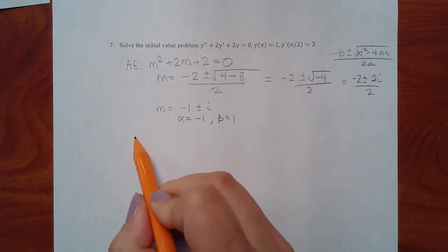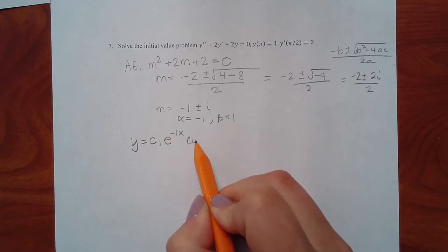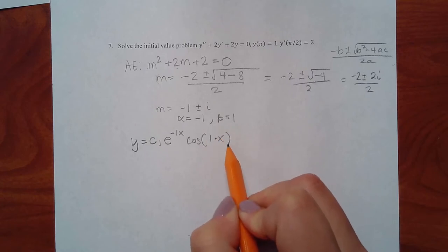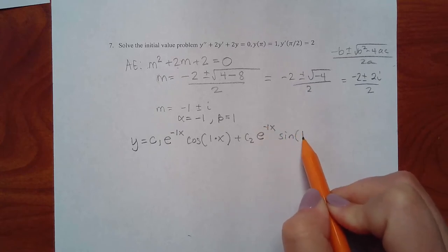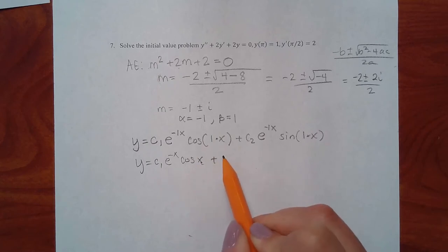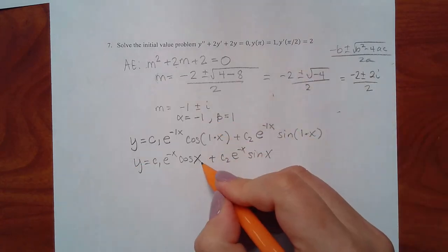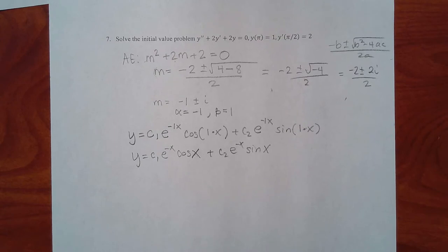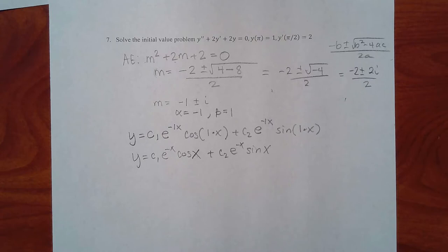Using the complex roots formula for constant coefficients: y equals c1·e to the alpha·x times cos(beta·x) plus c2·e to the alpha·x times sin(beta·x). Substituting alpha equals negative 1 and beta equals 1: y equals c1·e to the negative x times cos(x) plus c2·e to the negative x times sin(x). If this were not an IVP, we'd be done. But it has initial conditions, so we must also find y prime.